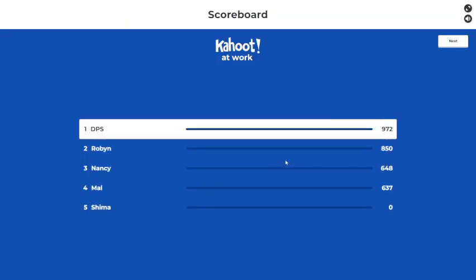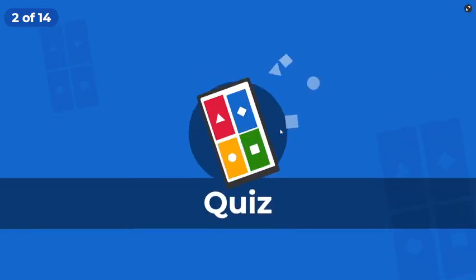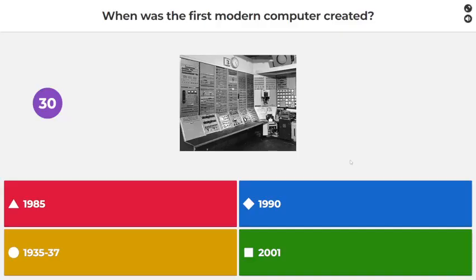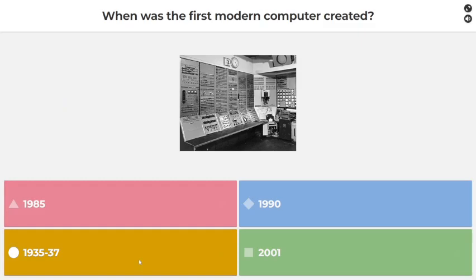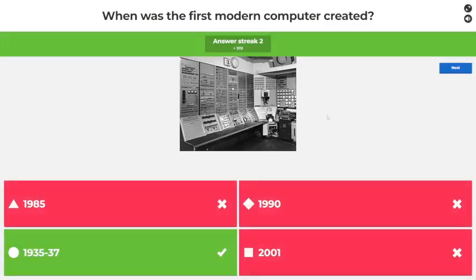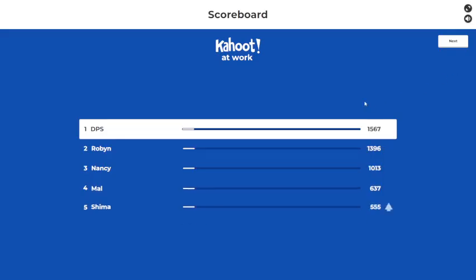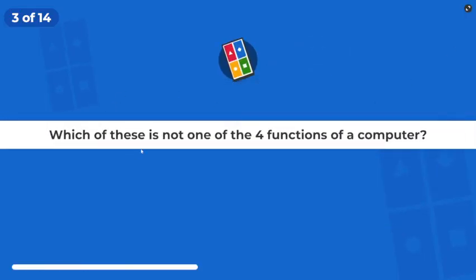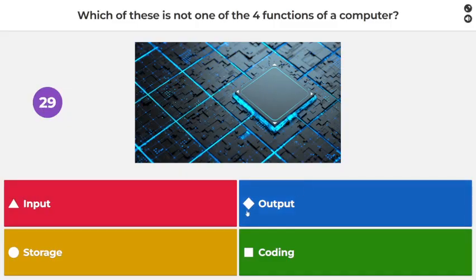Ha ha, that's perfect! When was the first modern computer created? 35 to 37, yay, nice! Which of these is not one of the four functions of a computer? Input, output...